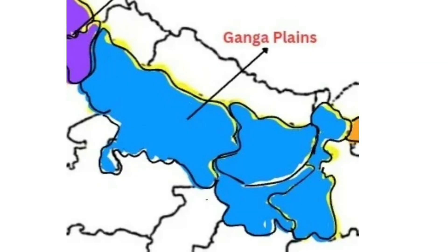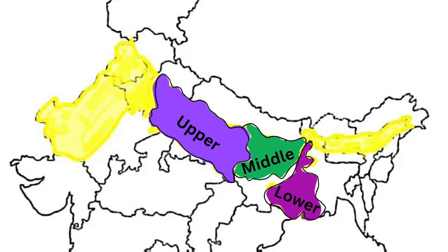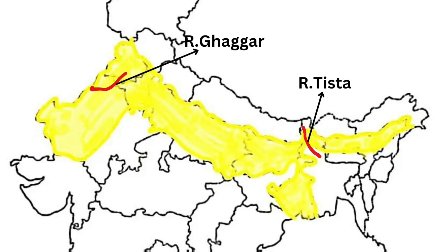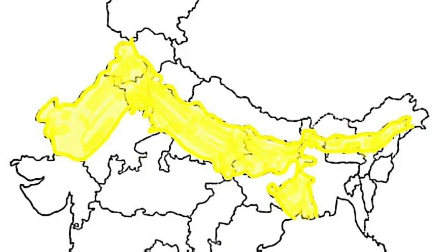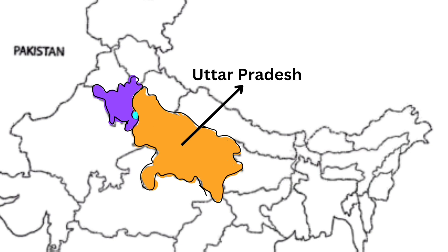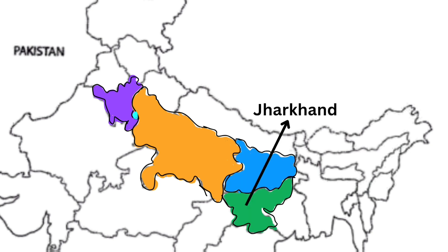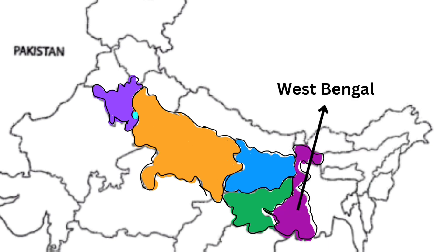Ganga Plains are divided into three parts: Upper Ganga Plains, Middle Ganga Plains, and Lower Ganga Plains. This plain extends between the Yamuna and Teesta Rivers. The states that lie in the Ganga Plain are Haryana, Delhi, Uttar Pradesh, Bihar, and parts of Jharkhand and West Bengal.